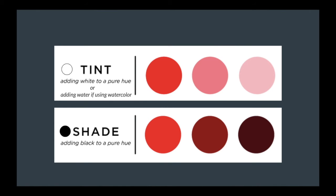So a tint is when you add white to a pure hue, or if we're using watercolor, which is what we're going to do for this project, it's when you add extra water. Adding extra water to your color is going to make it a lot lighter. So a tint is when you make your color lighter.